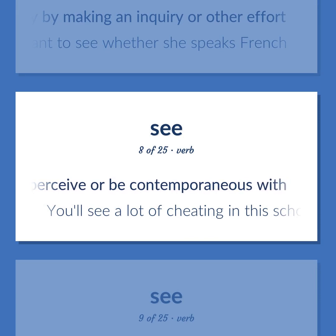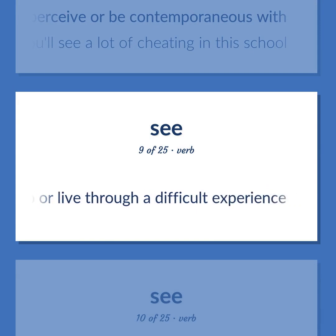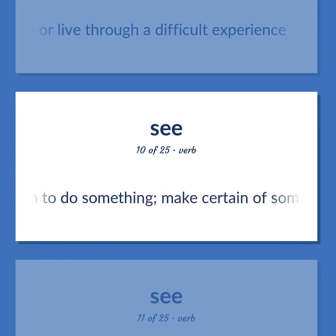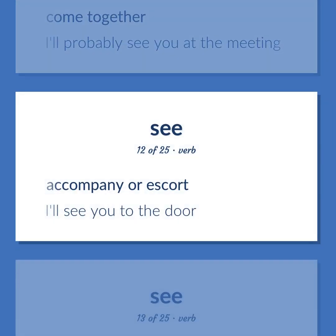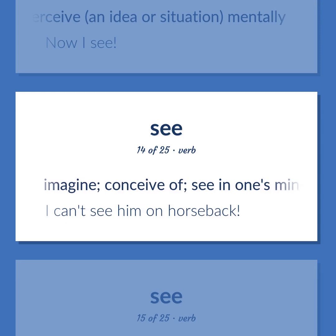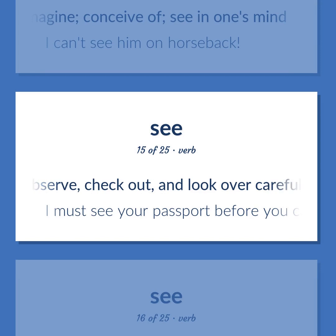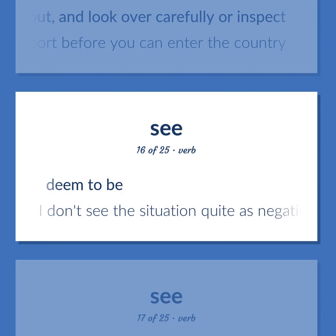Perceive or be contemporaneous with — you'll see a lot of cheating in this school. Undergo or live through a difficult experience. Be careful or certain to do something; make certain of something. Come together — I'll probably see you at the meeting. Accompany or escort — I'll see you to the door. Perceive an idea or situation mentally — now I see. Imagine; conceive of; see in one's mind — I can't see him on horseback. Observe, check out, and look over carefully or inspect — I must see your passport before you can enter the country. Deem to be — I don't see the situation quite as negatively as you do.